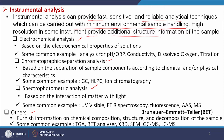Electrochemical analysis is based on the electrochemical properties of solutions — for example, analysis of pH, oxidation-reduction potential, conductivity, dissolved oxygen, and titration. Chromatographic separation analysis is based on the separation of sample components according to chemical and/or physical characteristics. Examples are GC, HPLC — gas chromatography, high performance liquid chromatography — and ion chromatography. Spectrophotometric analysis is based on the interaction of matter with light, such as UV, FTIR, fluorescence spectroscopy, atomic absorption spectroscopy, and mass spectroscopy.